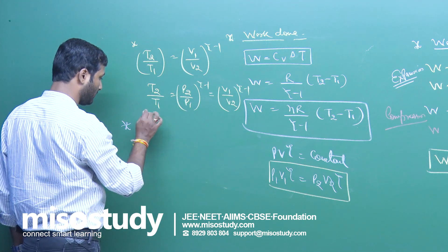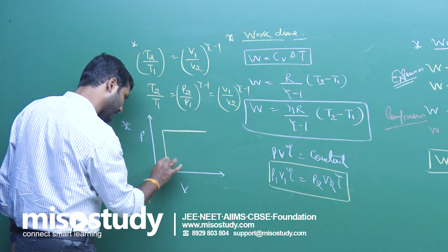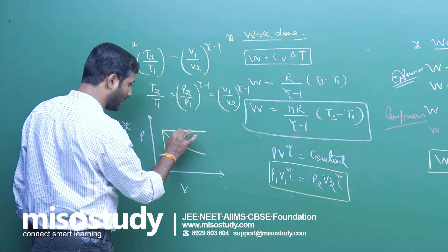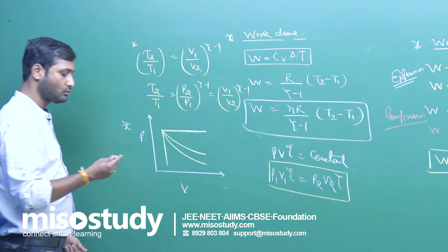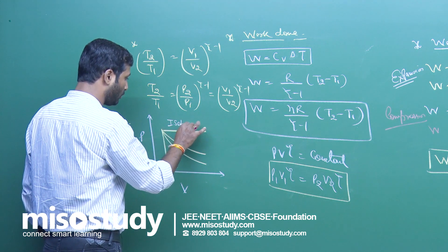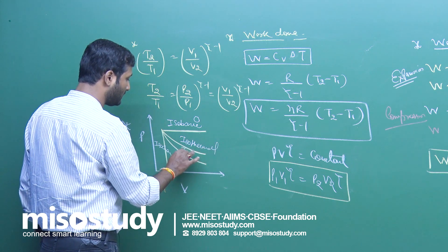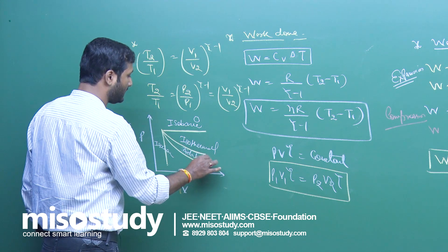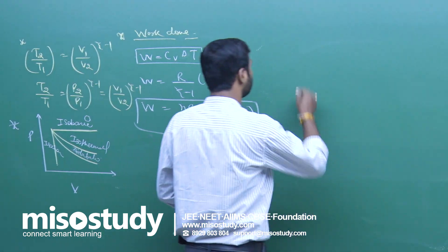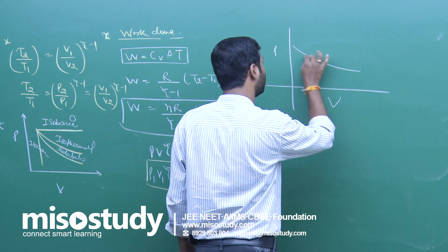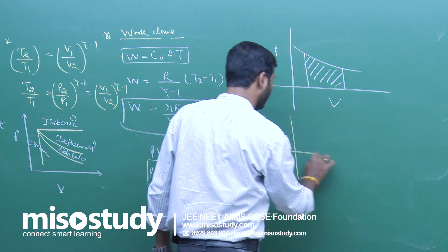The area under the curve in a P-V graph gives you the work done. On a P-V graph we can show all processes: isobaric (constant pressure), isochoric (constant volume), isothermal, and adiabatic. If you draw a P-V graph and find the enclosed area, that area represents the work done.